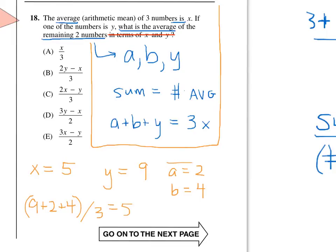Now, the average of the other two numbers, a and b, is 3. 2 plus 4 divided by 2 is 3. So, now we just have to go one by one through the answers and see which one gives us 3.